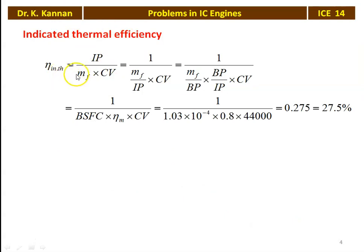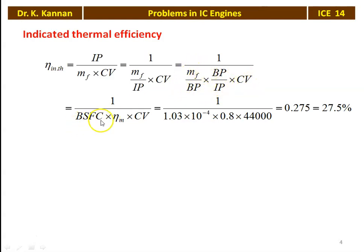The indicated thermal efficiency formula is IP divided by mass of fuel times calorific value. Rearranging, this equals 1 divided by (mass of fuel / brake power) × (brake power / indicated power) × CV, where mass of fuel divided by brake power is BSFC, and brake power divided by indicated power is mechanical efficiency. So BSFC × (1/mechanical efficiency) × CV gives: 1 / (1.03 × 10⁻⁴ × 0.8 × 44,000) = 0.275, which is 27.5%.